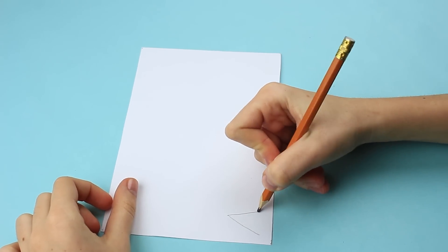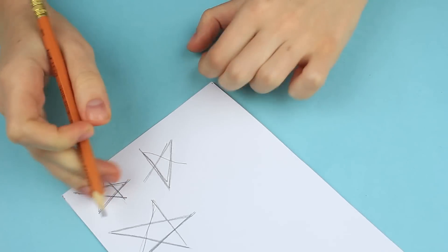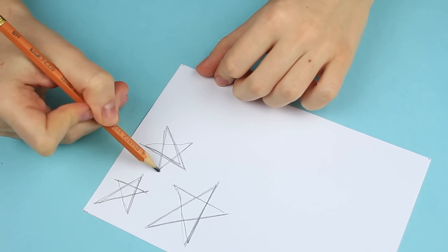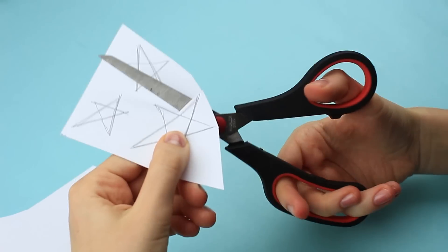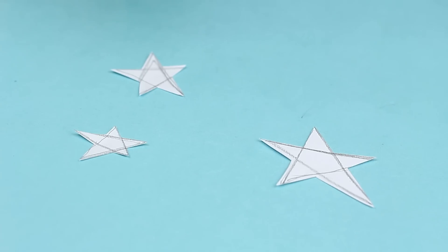Begin with making templates. Draw three five-pointed stars on thick paper. They can be of different size and not quite regular shape. Cut them out. This is it!